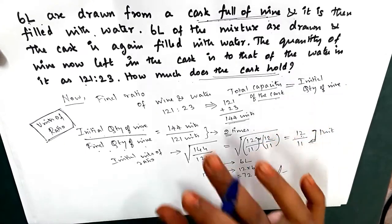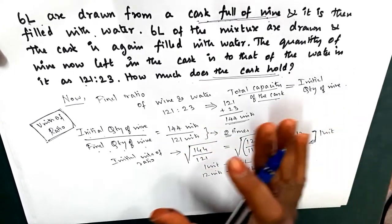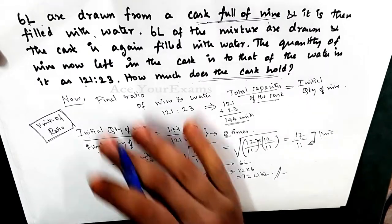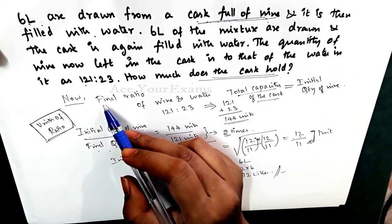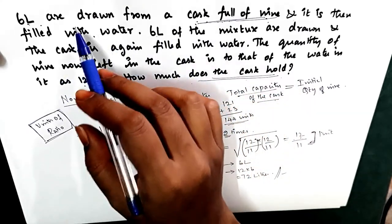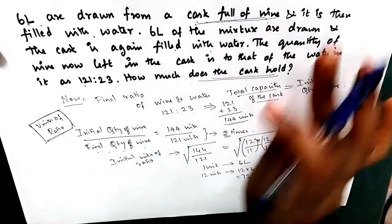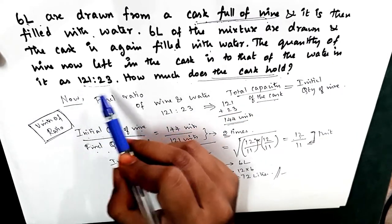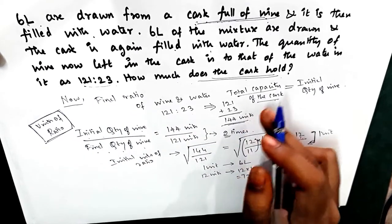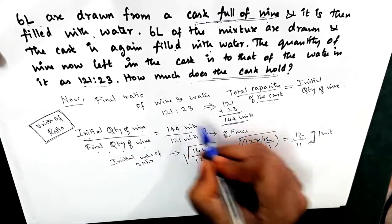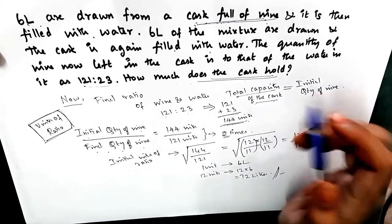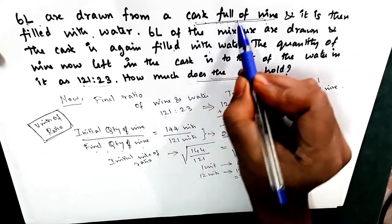If we make any mistake in a formula then the solution will also be wrong, so try to avoid using formulas for these types of questions — it is very easy if you solve using logic. Initially the cask was full of wine. After drawing 6 liters of the mixture or wine and filling with water, done two times, the final ratio of wine and water left is 121 to 23. Adding these we get 144 units, which is the total capacity of the cask — 121 is wine, 23 is water, and together they equal 144 units, the total capacity, same as the initial quantity of wine since the cask was initially full of only wine.